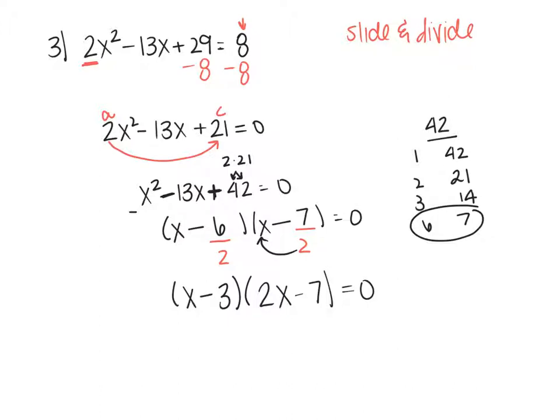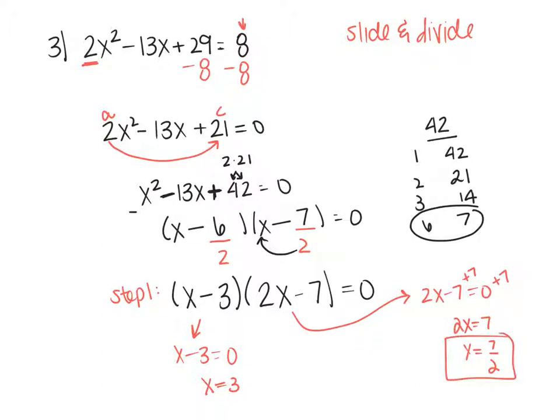Now I have the factored form. In Hawkes, this would be your step 1. I can use the zero product property and set each piece equal to 0. This one's going to give me x equals 3. Over here, I'm going to add 7 to both sides and get 2x equals 7, then divide by 2. So my two answers will be x equals 3 and x equals 7 over 2.